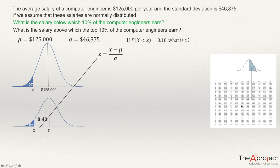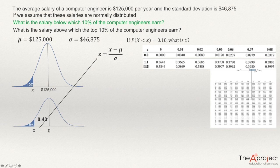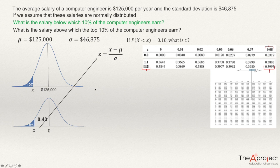Looking in the table for 40%: I see 0.3962, then 0.3980, then 0.3997. That value, 0.3997, is the closest to 0.40, and it corresponds to z = 1.28. But notice this z is negative — it is to the left of 0. Since 10% is to the left, z will be negative 1.28.